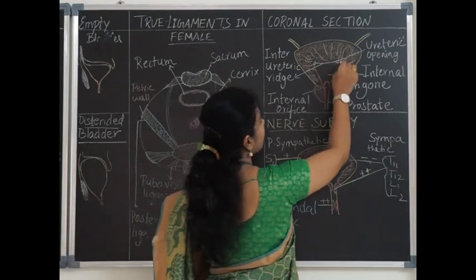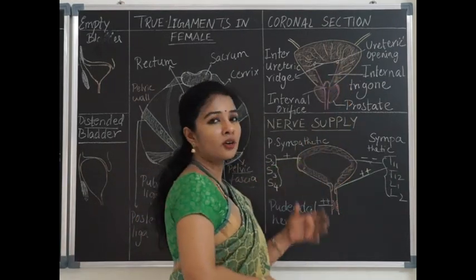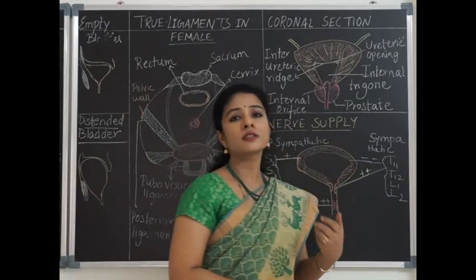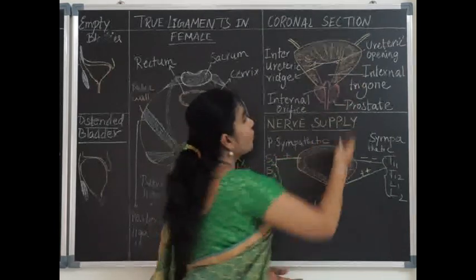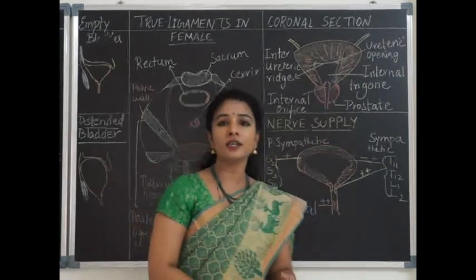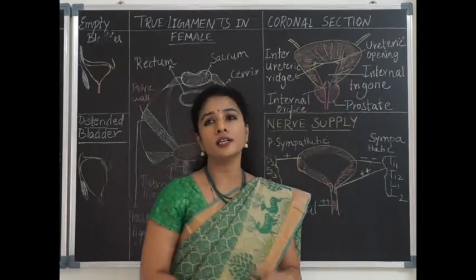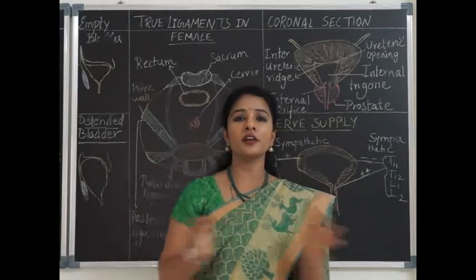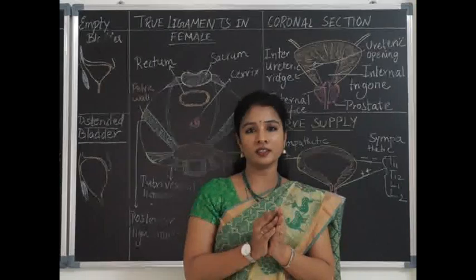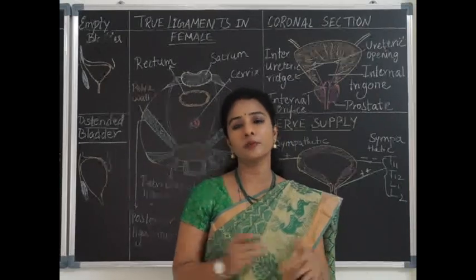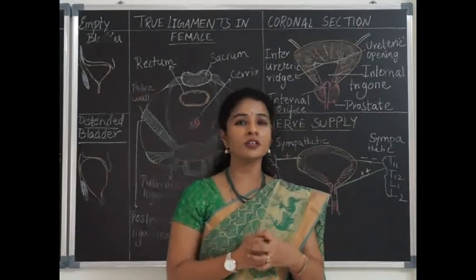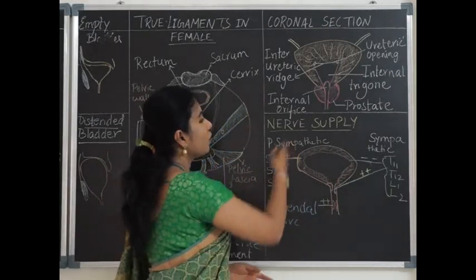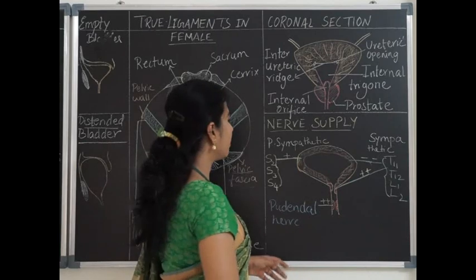Clinically, the internal trigone is very important because it guides surgeons during cystoscopy. The muscle within the wall of the urinary bladder is called the detrusor muscle, which is interlinked all over. When it contracts, it contracts together — not in peristaltic movements — causing voiding of urine from the urinary bladder.